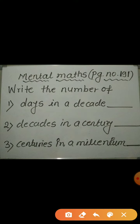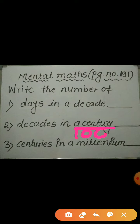Now the second: decades in a century. 1 century means 100 years. So how many decades will come in 100 years? 10 decades. Because 1 decade means 10 years, so 10 decades means 100 years.